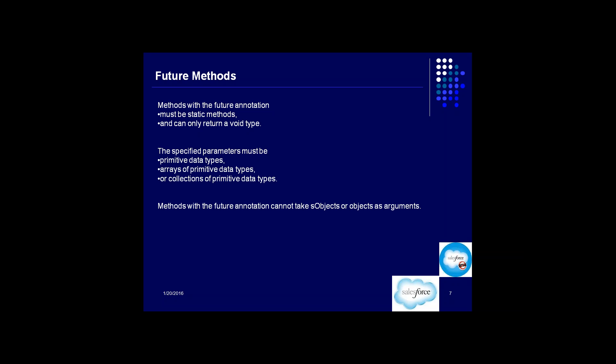Methods with the @future annotation cannot take SObjects or objects as arguments. The reason is that SObject is a record — data. There is a possibility that when you call the method, there can be a delay in execution. You might call the future method today and it might get executed tomorrow, or after two hours. There's a time lag between calling and execution. If you define an SObject as a parameter, its value — that particular record — might get changed in between.